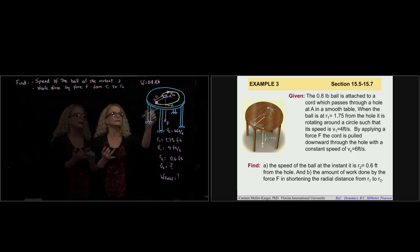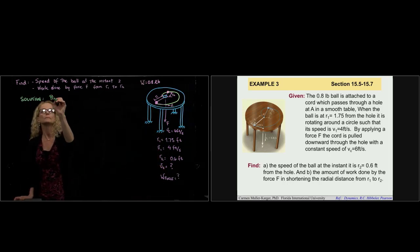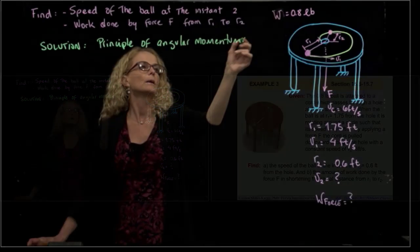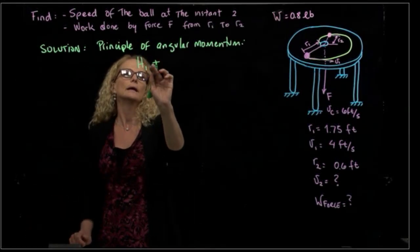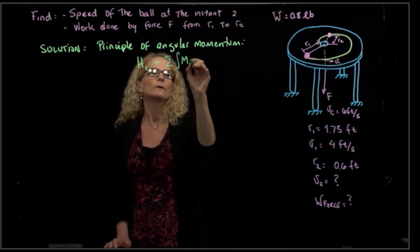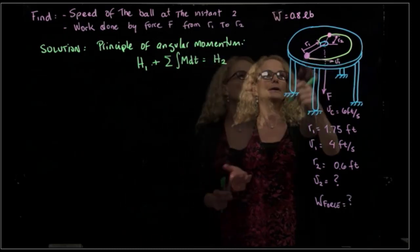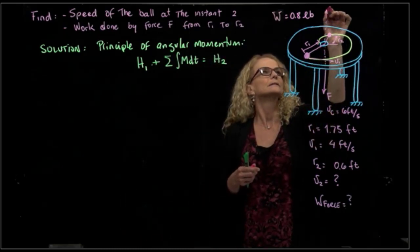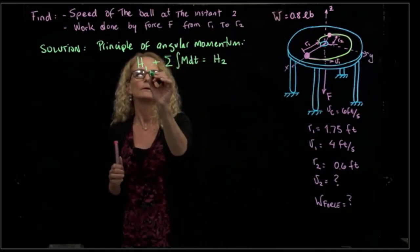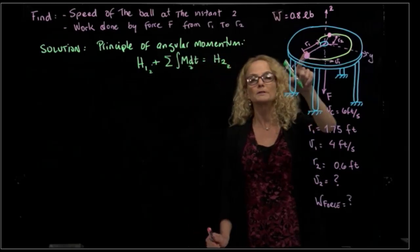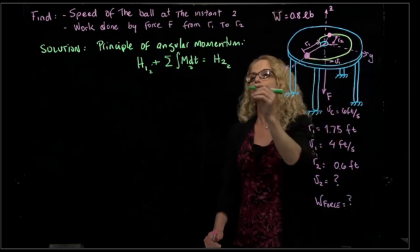We are relating distance with velocity, so I'm going to apply the principle of angular momentum. One way to write it is: the angular momentum in position 1 plus the sum of all moments with respect to time equals the angular momentum in position 2. The moment with respect to C equals zero because the only force is the tension of the cord, and it points towards the origin of the axis, so we have no net moment.